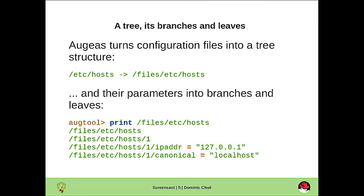Augeas does this by turning configuration files into an in-memory tree structure. So we see /etc/hosts here is placed under /files in memory, and beneath /etc/hosts, entries and fields are parsed. So we see the one entry here represents the first entry in the hosts file, and fields within that entry — IP address and canonical hostname — are represented as sub-nodes of that tree.